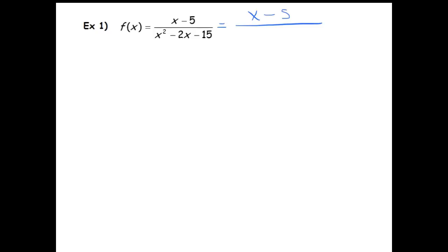So the top is x minus 5, and the bottom looks like it factors to x minus 5 and x plus 3. And you'll notice that the x minus 5 terms cancel, and so we're left with 1 over x plus 3.